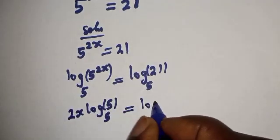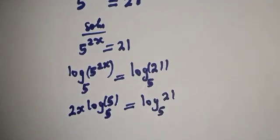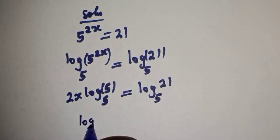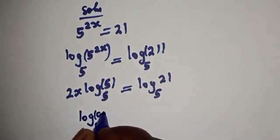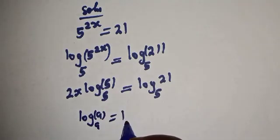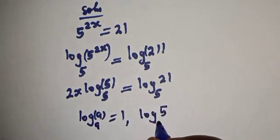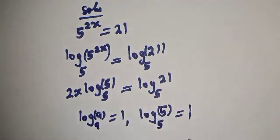This is equal to log 21 base 5. Now note that log of the same base, a base a, is equal to 1. Therefore log 5 base 5 is equal to 1.